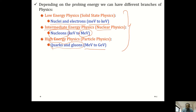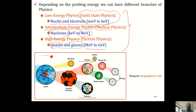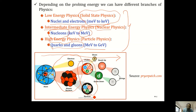In this course we are dealing with solid state physics, so the energy range is between a few milli electron volts to a few kilo electron volts. This is a schematic of how atomic structure changes as we increase probing energy: in solid state physics the atom contains a nucleus and electrons; in nuclear physics the nucleus consists of protons and neutrons; and at still higher energies we enter the high energy physics regime.